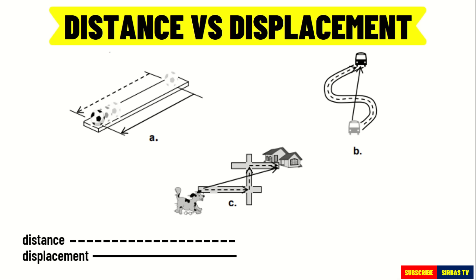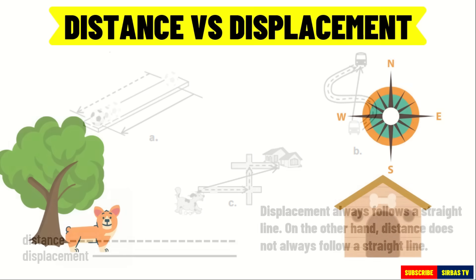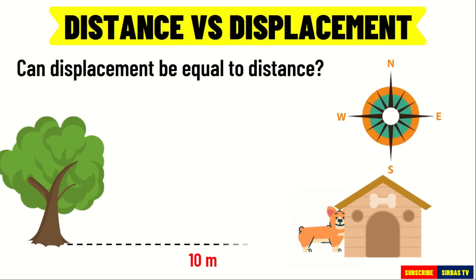What do you think is the difference between distance and displacement based on the given pictures? Displacement always follows a straight line. On the other hand, distance does not always follow a straight line. Displacement measures the length of the straight line that connects the object's point of origin and its point of destination. Distance measures the length of the path traveled by the object. Can displacement be equal to distance? Yes, this can happen when the path traveled is a straight line.